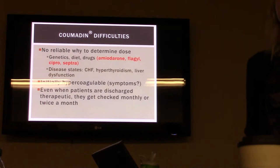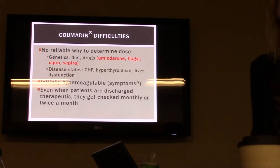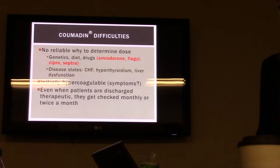There are difficulties with using warfarin — there's no reliable way to determine the initial dose. The effect is going to be based on genetics and diet: a person who eats a lot of salad or kale smoothies will have a different response than someone who doesn't. The big drug interactions to look out for when starting warfarin are amiodarone, Flagyl, Cipro, and Septra.